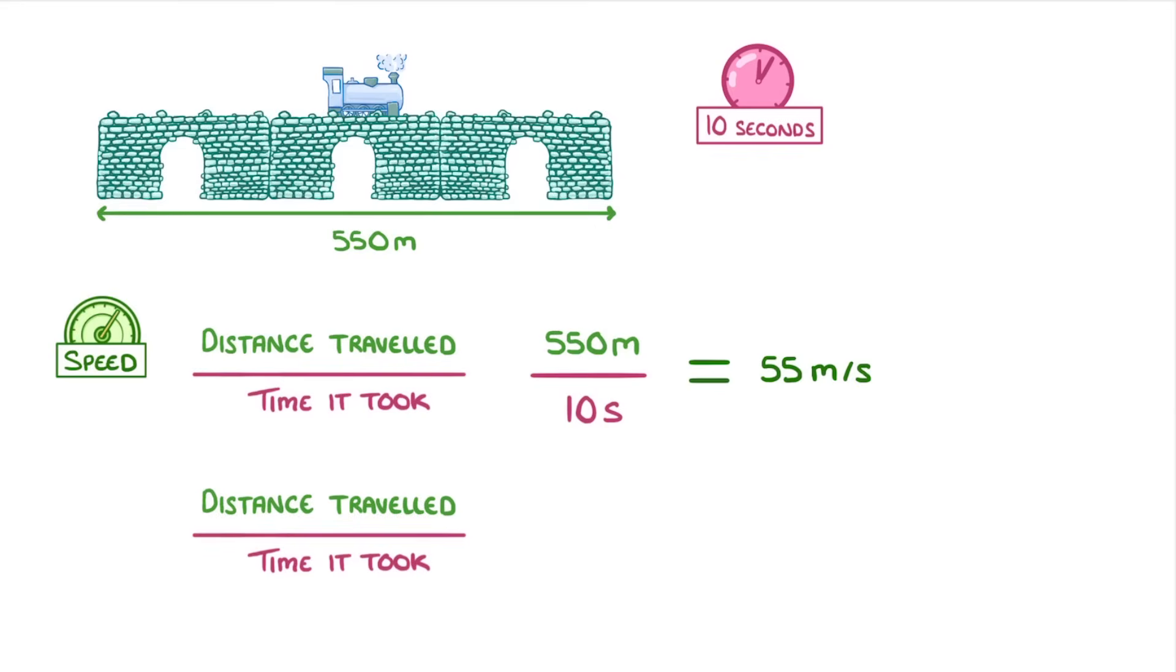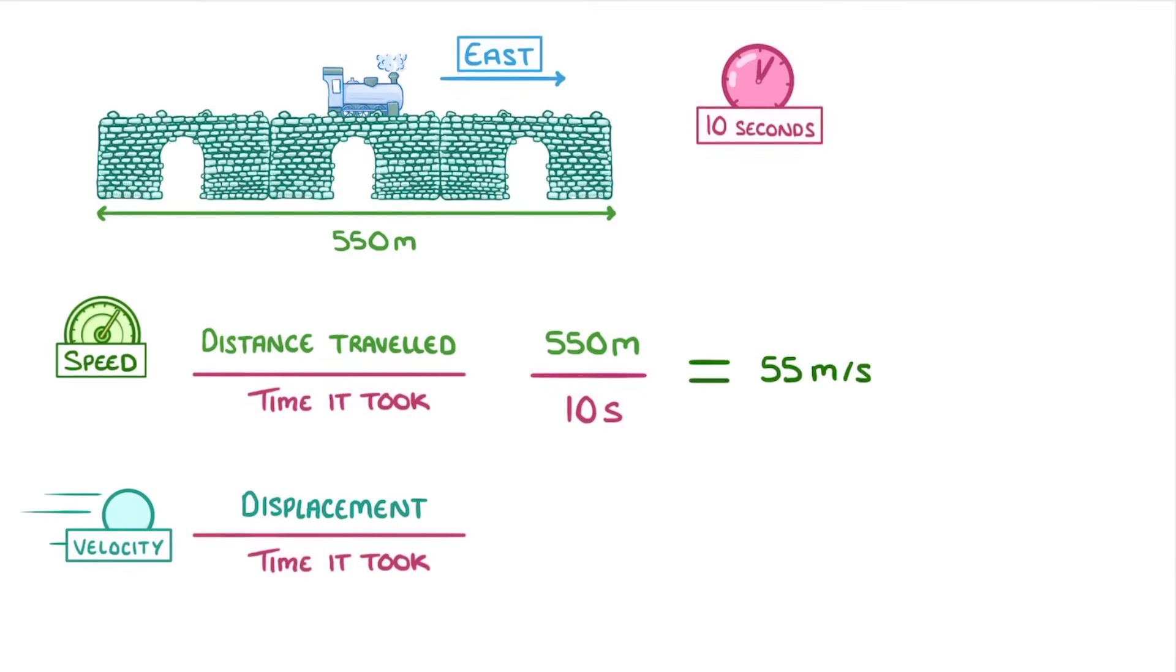If we took this same equation but replaced the scalar quantity of distance travelled with the vector quantity of displacement, we'd then be able to get the vector quantity of velocity. If we knew the direction that the train was travelling in, for example east, then instead of writing the distance we could write the displacement, which would be 550 meters east. The time would still be 10 seconds, and the velocity would still have a value of 55, but the units of the velocity would be meters per second east, rather than just meters per second, like we'd got for speed.